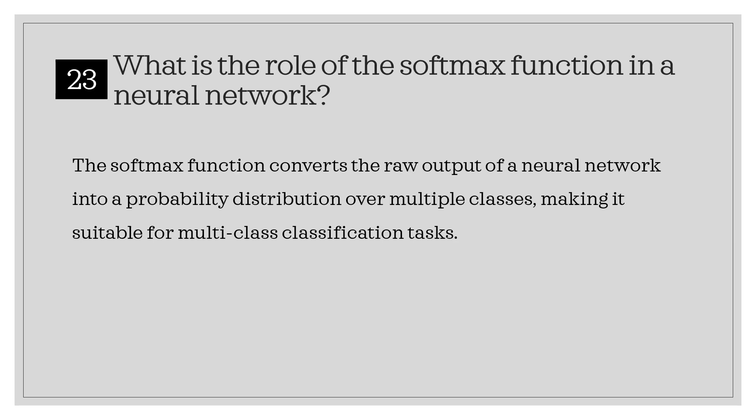What is the role of the softmax function in a neural network? The softmax function converts the raw output of a neural network into a probability distribution over multiple classes, making it suitable for multi-class classification tasks.